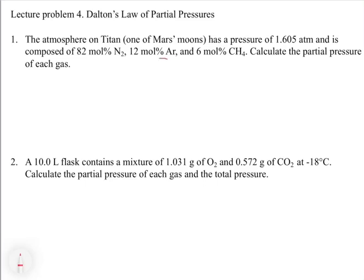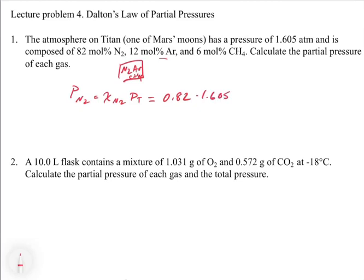Let's take a look at lecture problem four, with some examples of Dalton's Law. The atmosphere on Titan, one of Saturn's moons, has a pressure of 1.605 atmospheres and is composed of 82% nitrogen, 12% argon, and 6 mole percent methane. Calculate the partial pressure of each gas. To find the partial pressure of nitrogen, we multiply the mole fraction by total pressure: 0.82 times 1.605 atmospheres equals 1.32 ATM.